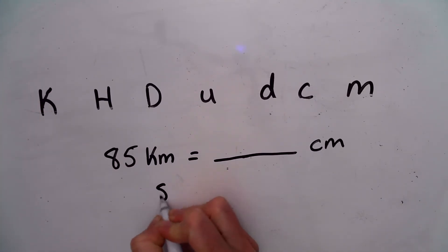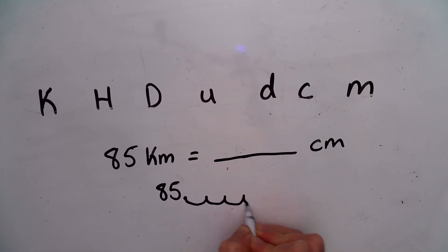So that means I'm going to move the decimal, which would start here, five times. One, two, three, four, five times to this spot.